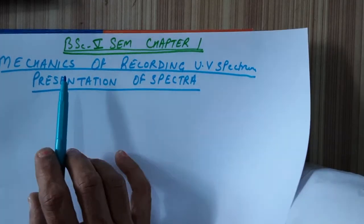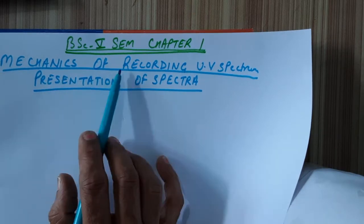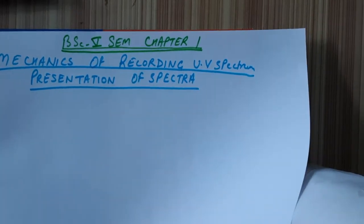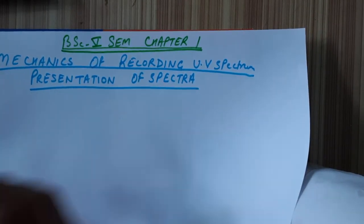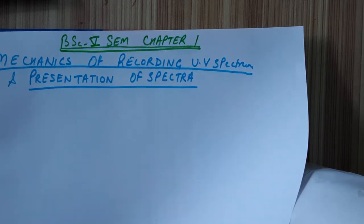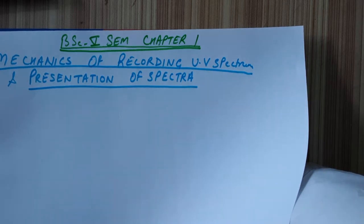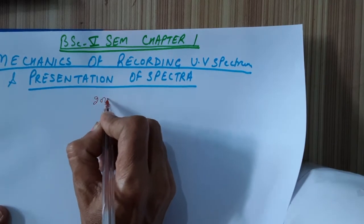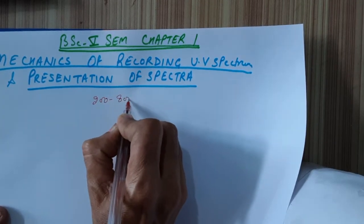Today we will discuss the mechanics of recording UV spectra and the presentation of that spectra. The commonly used spectrophotometers will record the spectra over the range of 200 to 800 nanometers.